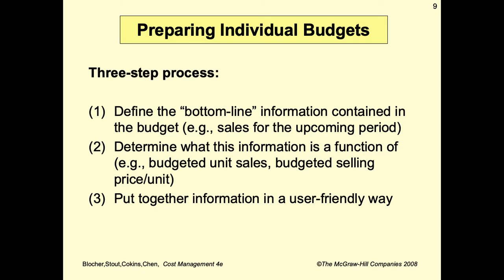There are three steps to prepare individual budgets. First, define the bottom-line information contained in the budget — for example, sales for the upcoming period. Second, determine what this information is a function of — for example, budgeted unit sales and budgeted selling price per unit. Third, put the information together in a user-friendly way.